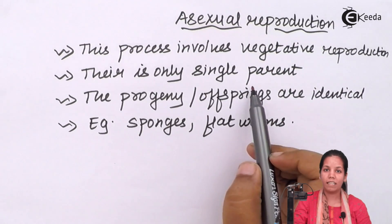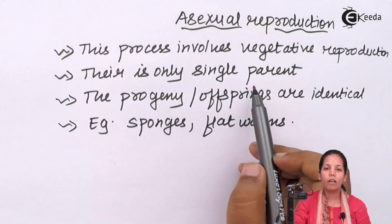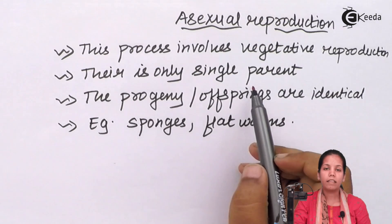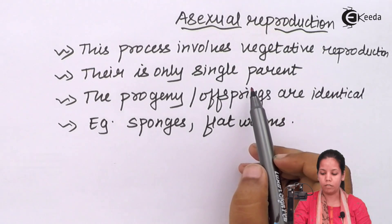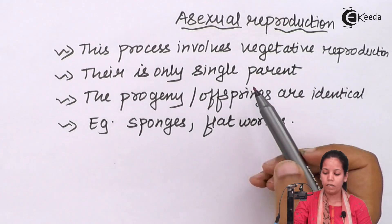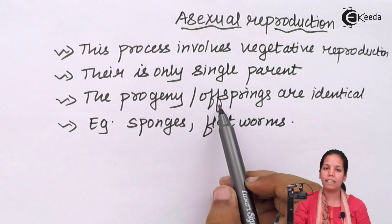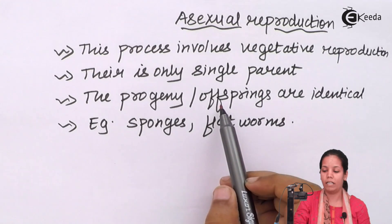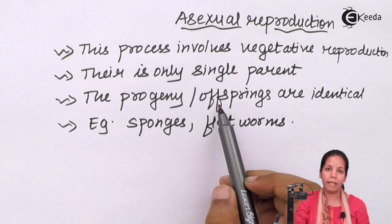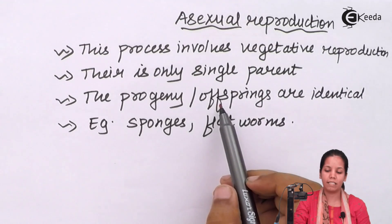There is only one single parent involved. In hydra, whenever there is a gemmule formation, the bud outgrows and forms another daughter individual. So obviously one single parent is involved. The progeny or offspring is very similar or identical in terms of genetic makeup to that of their pre-existing parent.